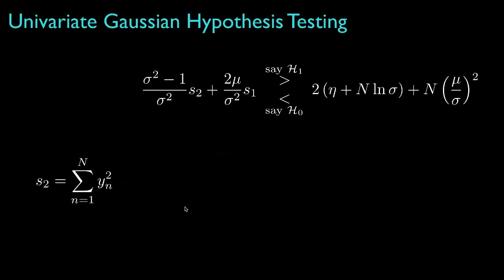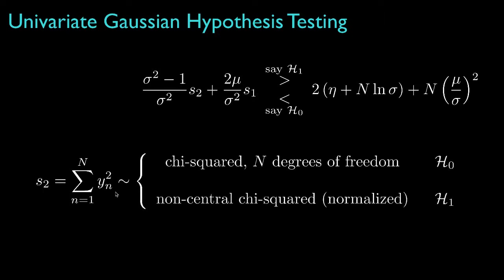The statistic S2 is the sum of the squares of these preprocessed data, and that would have a chi-square distribution with N degrees of freedom under hypothesis 0, and when properly normalized, would have a non-central chi-square distribution under hypothesis 1, provided that the two means are not equal.